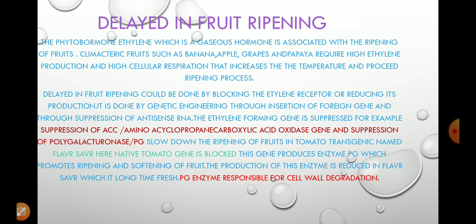The tomato produced by this technique is known as the Flavr Savr tomato. It is a transgenic plant that has been commercialized because of the thick covering of the cell wall, which cannot be degraded by the enzyme, and the fruit remains fresh for longer compared to native tomatoes. This is achieved by suppressing the gene that produces the PG or ACC enzyme, thereby delaying the fruit ripening process.